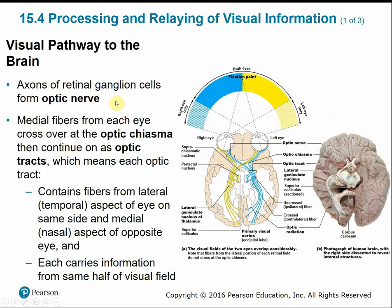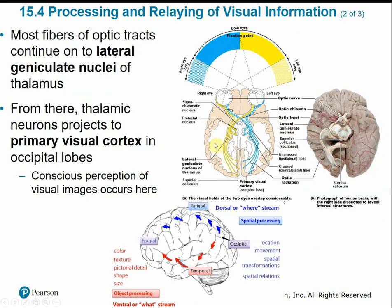As the axons of the retina leave the eye, they form the optic nerve. As the optic nerve travels to the brain, it crosses over at the optic chiasma, then continues along the optic tracts. Each optic tract contains fibers from the lateral aspect of the same-side eye and the medial aspect of the opposite eye, so each cerebral hemisphere receives input from both eyes. Most fibers continue to the lateral geniculate nucleus within the thalamus, which reroutes impulses to the primary visual cortex in the occipital lobes.